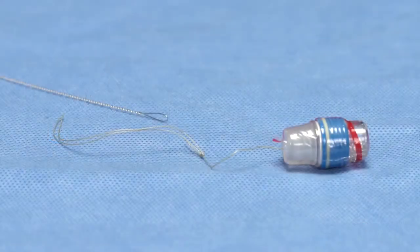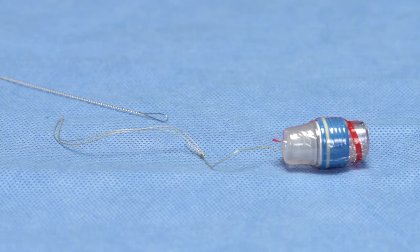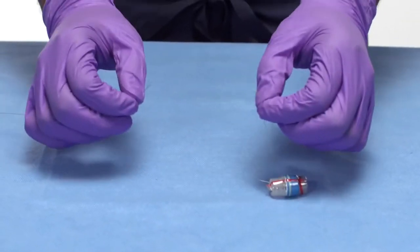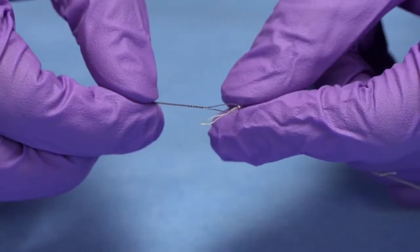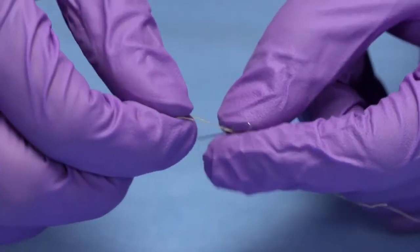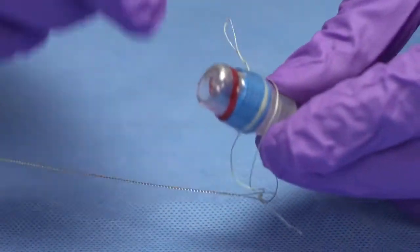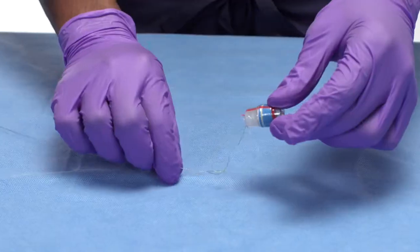Next, attach the ligating unit to the tripwire. Attach the pulling loop of the ligating unit to the wire loop connector on the distal end of the tripwire by threading the pulling loop through the tripwire loop. Then thread the ligating unit through the pulling loop. Pull to tighten.